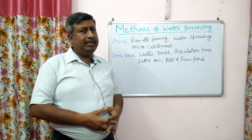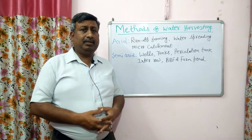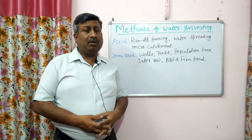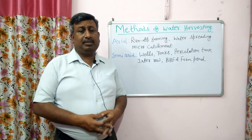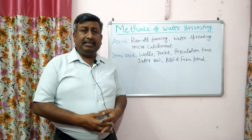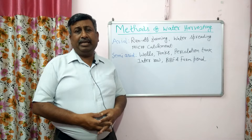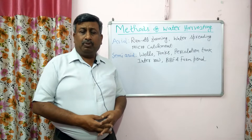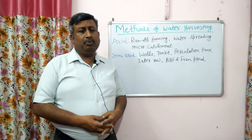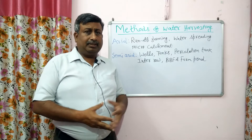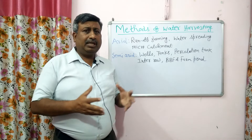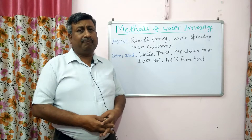In arid regions, the problems are low rainfall and high temperature. Soils are not fertile — they are sandy, found in desert and rocky areas with bushy vegetation. Infiltration and percolation are poor, cultivated area is very small, the area is stony, and soil is not fertile. These are the different types of problems in arid regions.